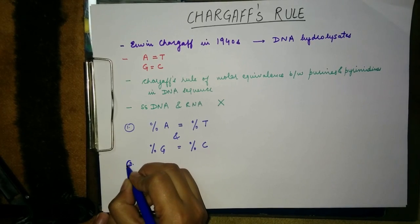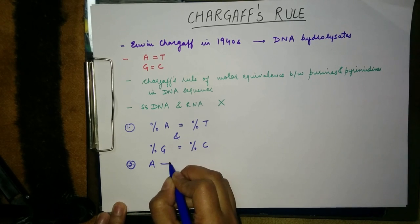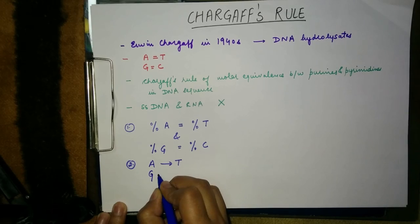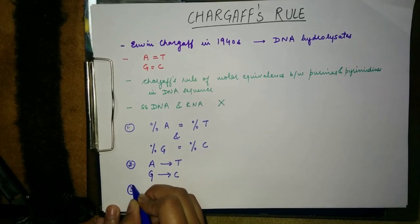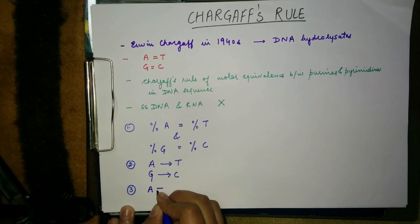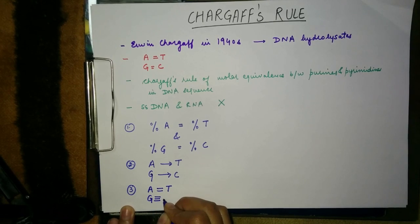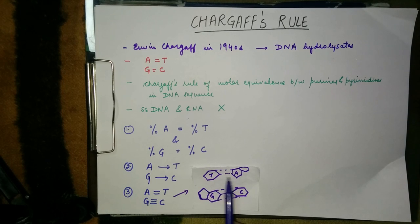The second observation is that adenine always pairs with thymine and guanine always pairs with cytosine. The third observation is that adenine makes double hydrogen bonds with thymine and guanine makes triple hydrogen bonds with cytosine. This can be illustrated as adenine pairing with thymine through two hydrogen bonds and guanine pairing with cytosine via three hydrogen bonds.